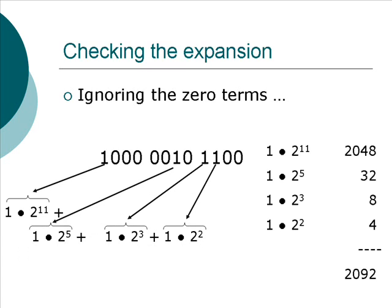So, I take each of those powers of 2, where there is a 1 for the digit, and I compute that exponent. 2 to the power of 11 is equal to 2048. 2 to the power of 5 is equal to 32. 2 cubed is equal to 8, and 2 squared is equal to 4. When you add those up, 2048 plus 32 plus 8 plus 4, you get 2092.